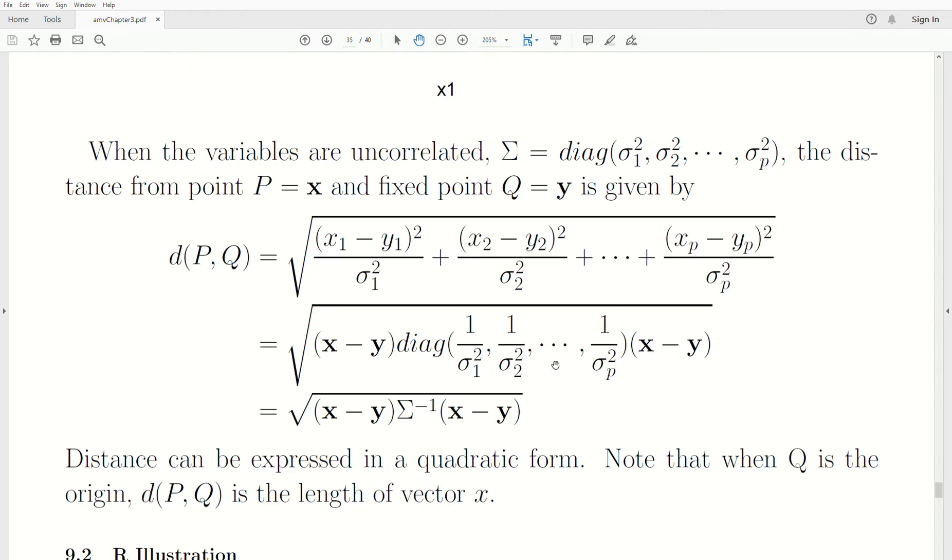And the formula in general, when we have uncorrelated data, that means our covariance matrix is a diagonal matrix. The off diagonal is zero. Down the diagonal would be the variances. That means they're uncorrelated. The covariance is zero, or the correlation is zero. Same thing. Now the distance from point x to a fixed point q is given by this formula. We take the square difference of the first component divided by the variance associated with it, plus the square difference of the second component, divided by the variance associated with the second variable or second component, and all the way to p variables. But this can be rewritten in quadratic form, where we look at the vector x minus y, and this diagonal matrix in the middle.